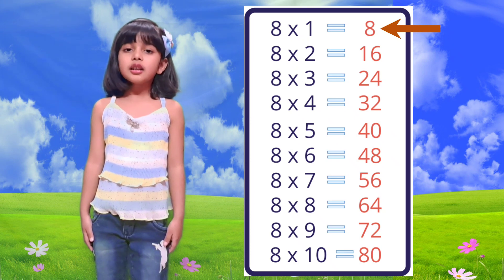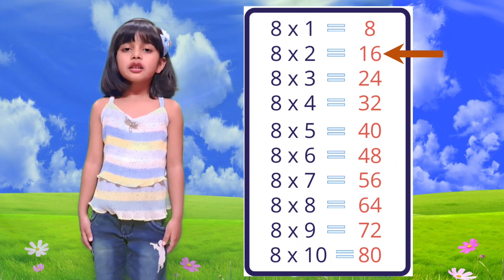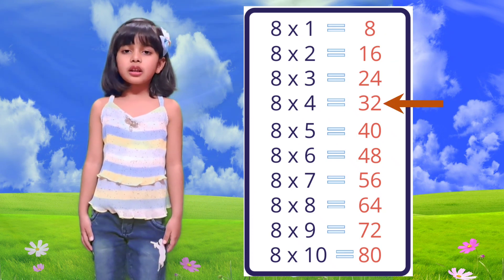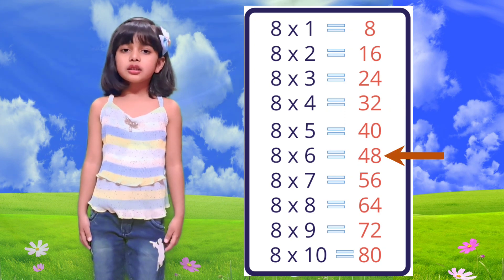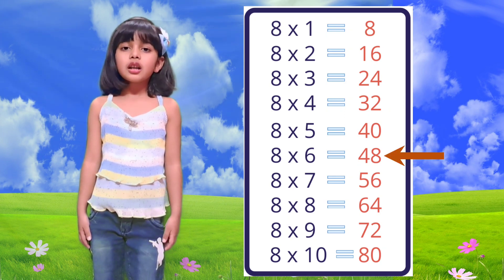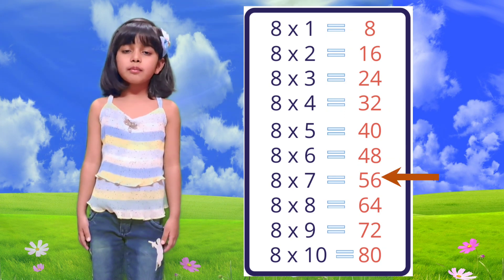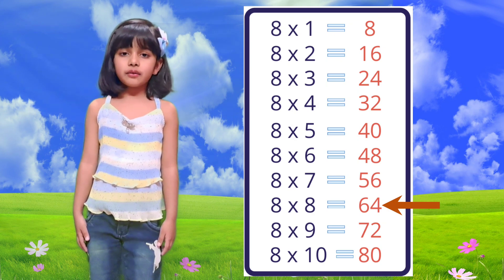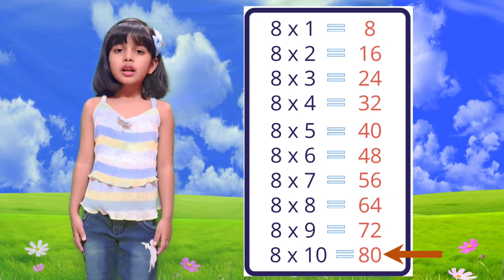Table of 8. 8 1 is 8, 8 2 is 16, 8 3 is 24, 8 4 is 32, 8 5 is 40, 8 6 is 48, 8 7 is 56, 8 8 is 64, 8 9 is 72, 8 10 is 80.